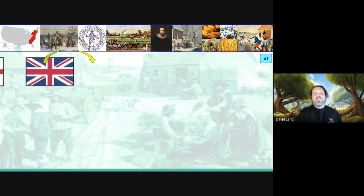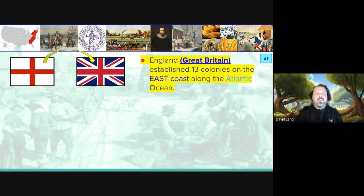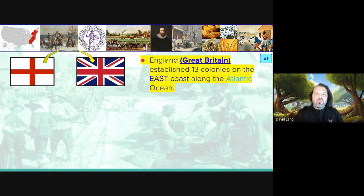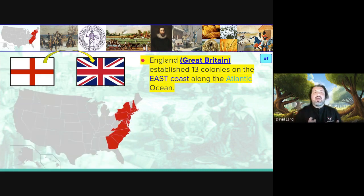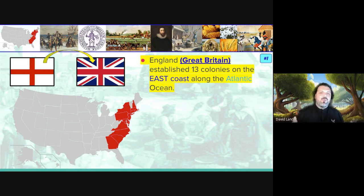This is the flag of England. The flag of England becomes the Union Jack because there's a change there. We're going to call England Great Britain — and I'm okay if you say either one in class — which establishes and owns the 13 colonies. The 13 colonies are along the east coast of America, that red section highlighted on the map. This is the beginning of our future United States.